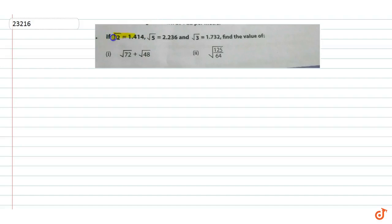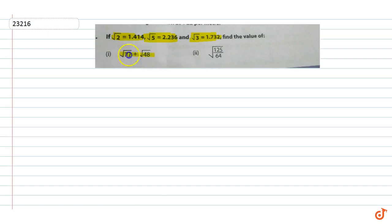If root 2 equals 1.414, root 5 equals 2.236, and root 3 equals 1.732, then in this question we have to find the value of root 72 plus root 48 plus root 125 by 64.